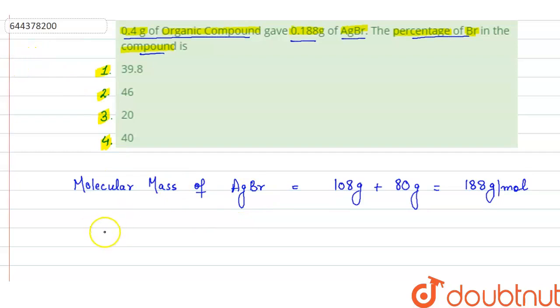Now it means that if we take 188 gram of AgBr, it contains 1 mole of bromine and the mass of 1 mole bromine is 80 gram. So in 188 gram AgBr, there will be 80 gram bromine.